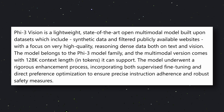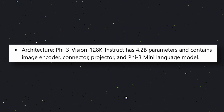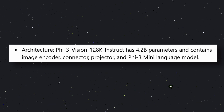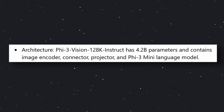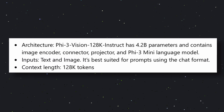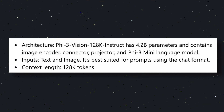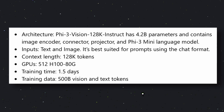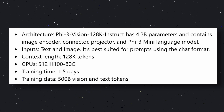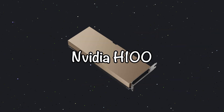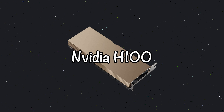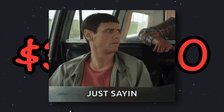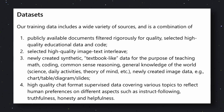If we look at their architecture, we can see that it is basically based on the Phi-3 Mini model, with an image encoder, connector, and a projector. It has a context length of 128K, which is amazing. It has been trained on 500 billion tokens of data, including vision and text data. It has been trained with 512 NVIDIA H100 GPUs — one such GPU costs $30,000, just saying. This training data includes publicly available documents filtered rigorously for quality, selected high-quality educational data, and code.